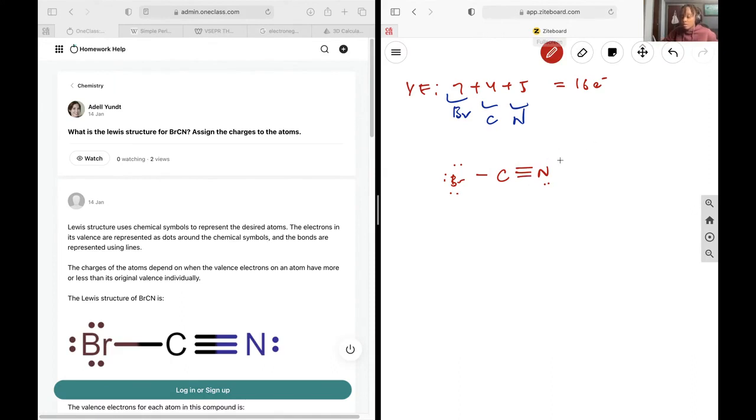Nitrogen tends to like 3 bonds, so that you can get 1, 2, 3, 4, 5. So 5 minus 5 equals 0. And carbon likes 4 bonds. And so you can get 4 minus 4, giving you 0. And so this would be our best structure.